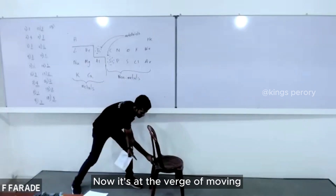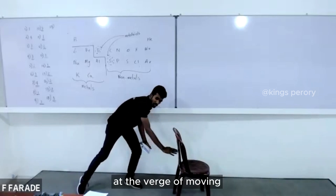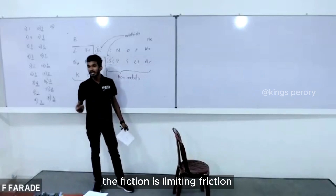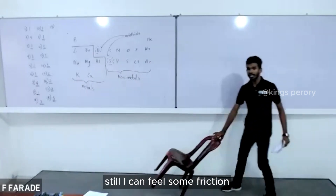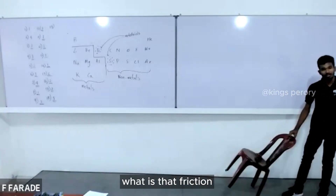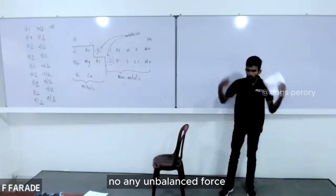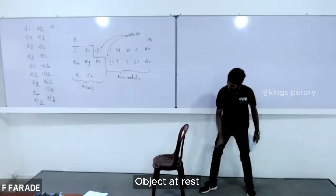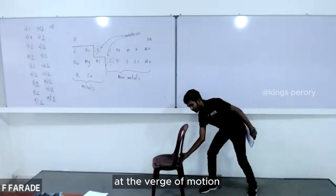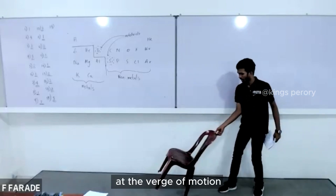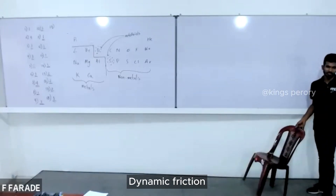I am slowly increasing the force until we reach the verge of moving — after this, the object will move. At the verge of motion, the friction is called limiting friction. Once it is moving, I can still feel some friction — that is dynamic friction. So the three types: object at rest with no unbalanced force — no friction; force applied but no motion — static friction; at the verge of motion — limiting friction; when moving — dynamic friction.